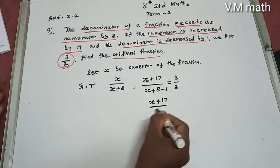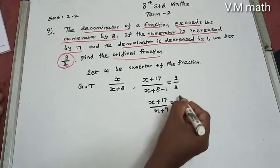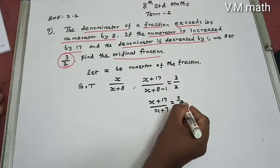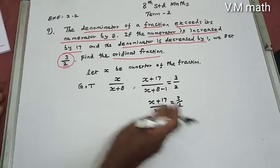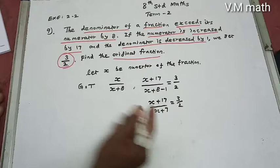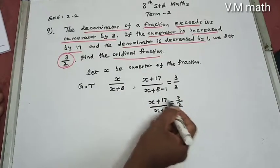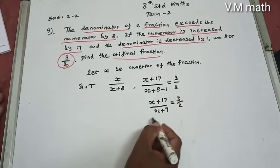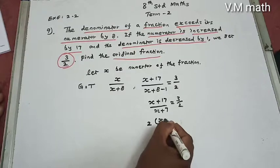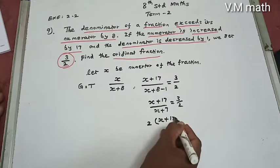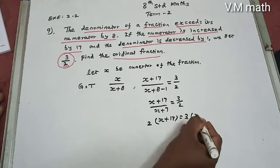So x plus 17 divided by x plus 7 equals 3 by 2. Using cross-multiplication: 2 into x plus 17 equals 3 into x plus 7.